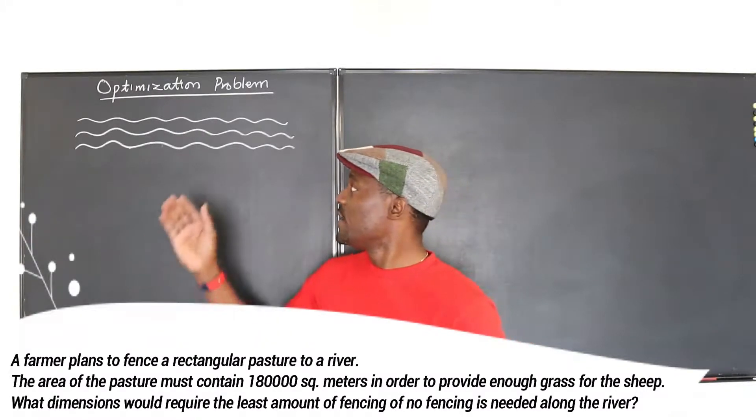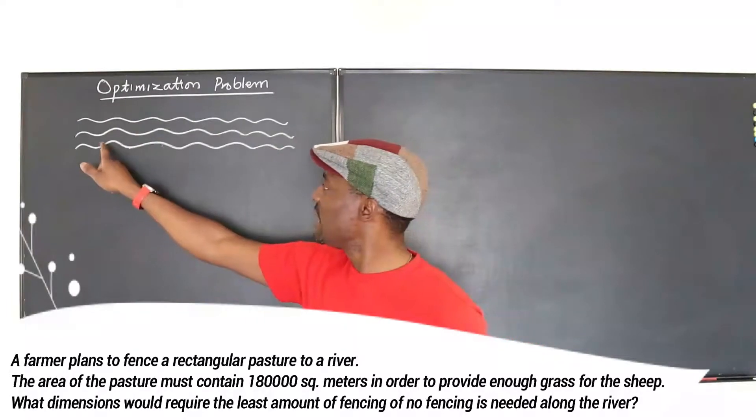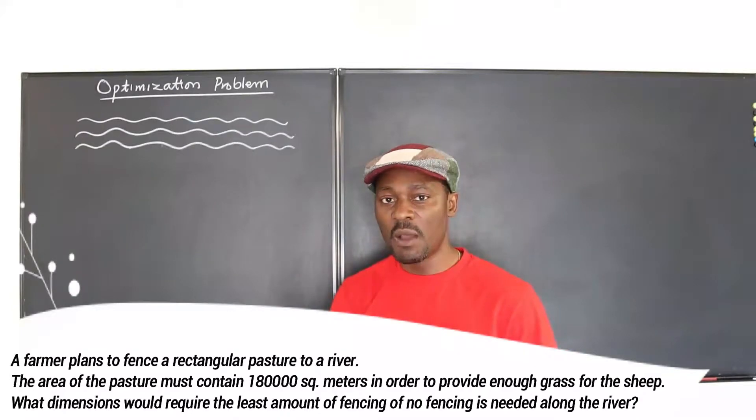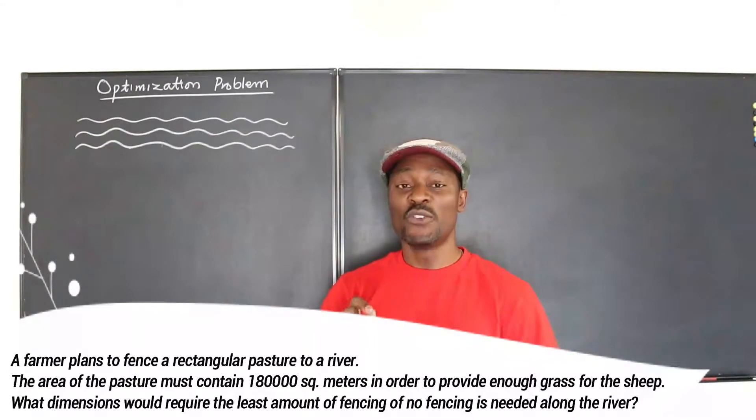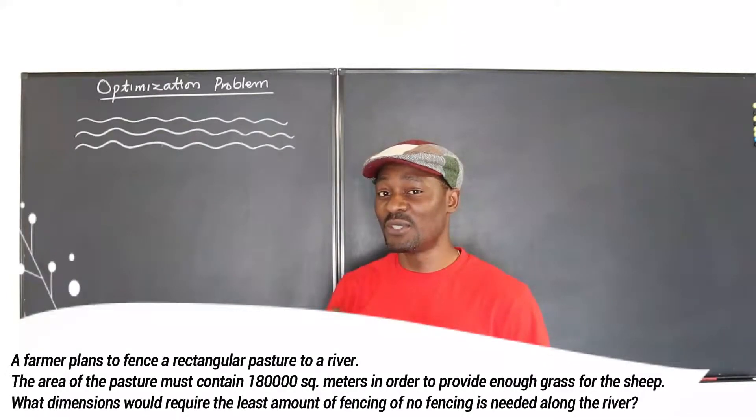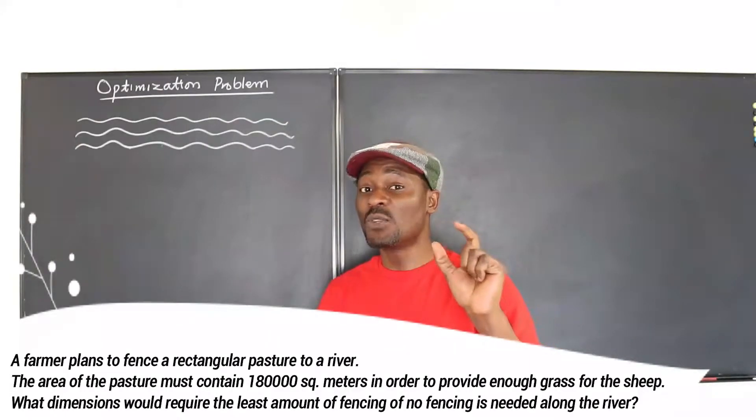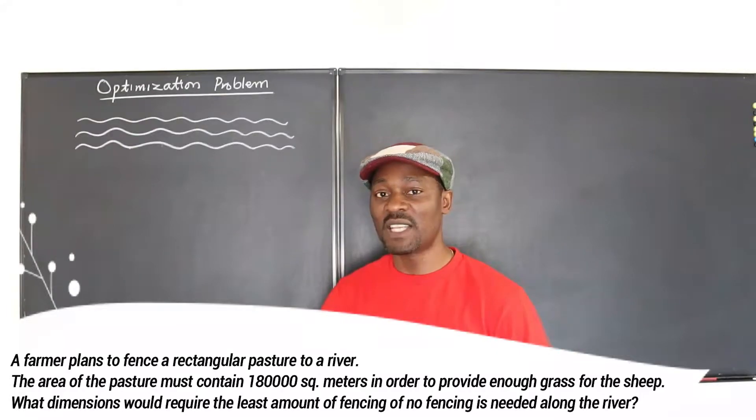He usually walks around this river, but he wants to create a nice little fence around this river in a rectangular shape. He wants the area of the pasture he creates to be 180,000 meters squared. The problem, however, is he doesn't have a lot of money, so he wants us to help him decide what will be the dimensions of the rectangle so that he will spend the least amount of money in creating that rectangular fence.